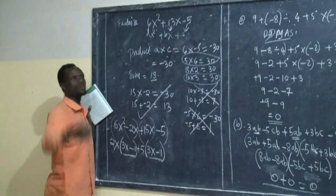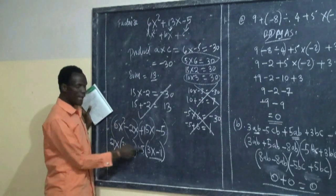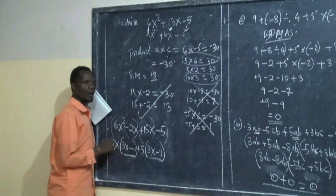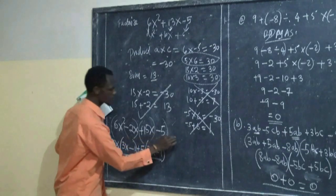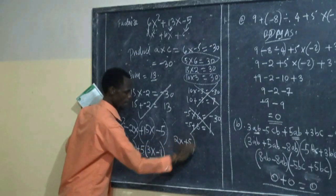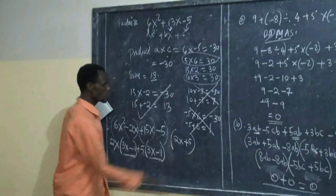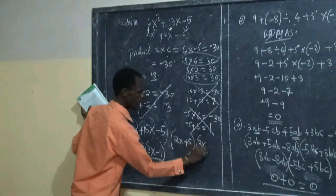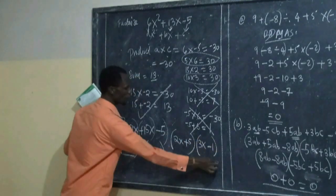Now choose one of them to represent. You collect the numbers which are outside of the bracket: that is 2x, then 5. And the other side you have 3x then negative 1. So you have these things.